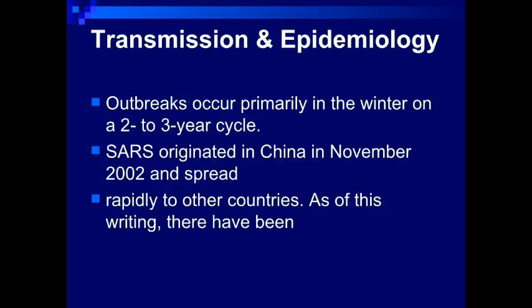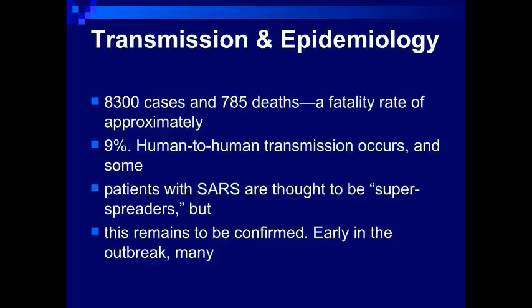Outbreaks occur primarily in the winter on a two-to-three-year cycle. SARS originated in China in November 2002 and spread rapidly to other countries. As of this writing, there have been 8,300 cases and 780 deaths, a fatality rate of approximately 9%. Human-to-human transmission occurs, and some patients with SARS are thought to be super-spreaders, but this remains to be confirmed. Early in the outbreak, hospital personnel were affected, but respiratory infection control procedures have greatly reduced the spread within the hospital.